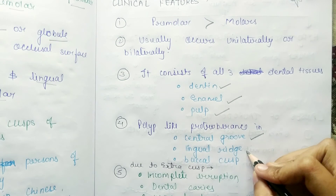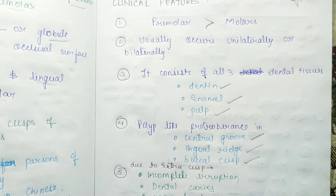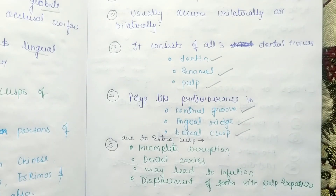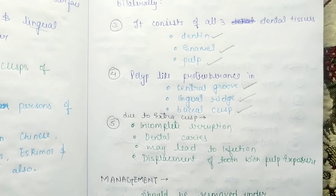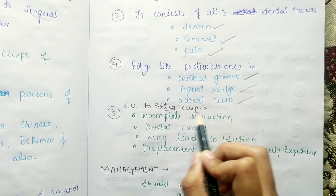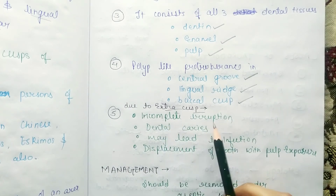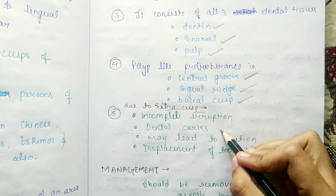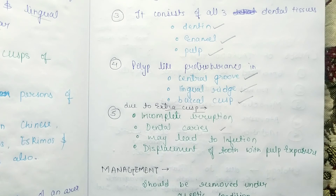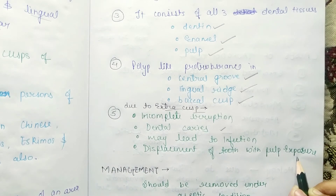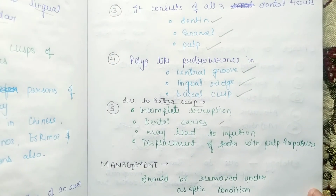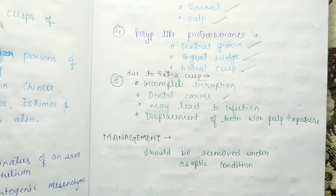This polyp-like protuberance can be located in the central groove, lingual ridge, or buccal cusp. Due to this extra cusp, complications include incomplete eruption, dental caries, infection, displacement of the tooth, and pulp exposure.